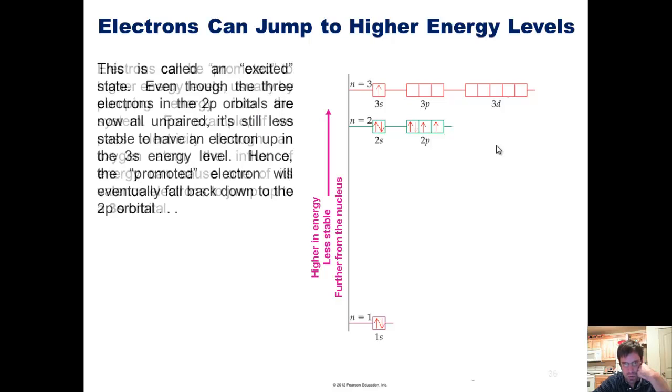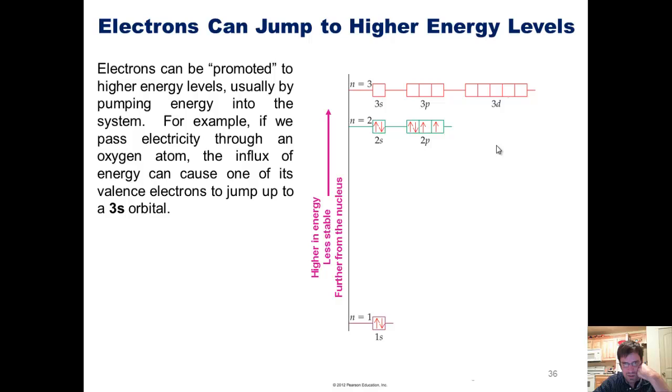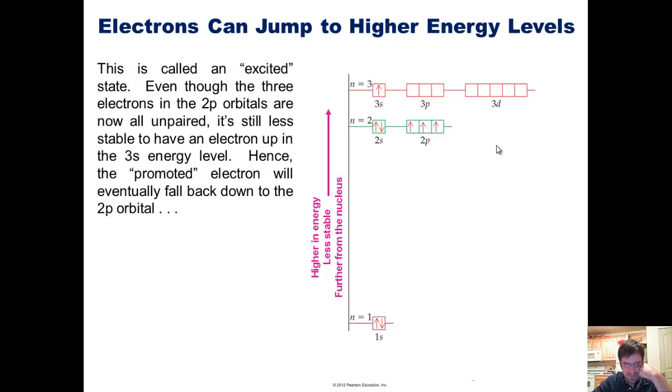Let's take a look at it again. We'll go back. So here is oxygen's ground state. We have all of these electrons in the 2p orbital, but if I pump some energy into oxygen, one of those electrons will go unpaired up to the 3s orbital. This circumstance where one of the electrons has been promoted to a higher energy level is called an excited state.